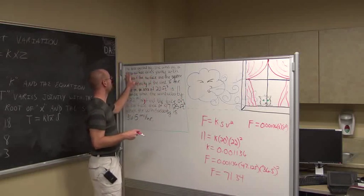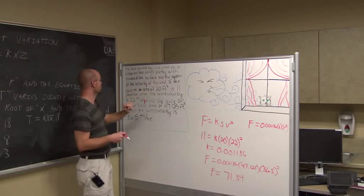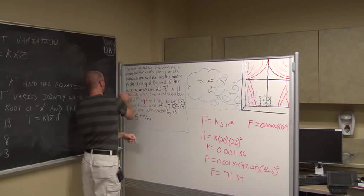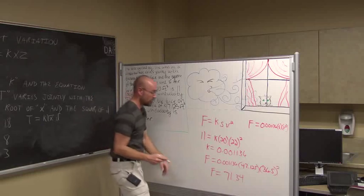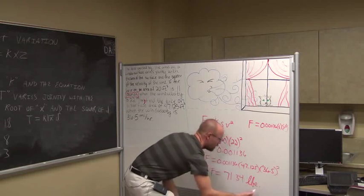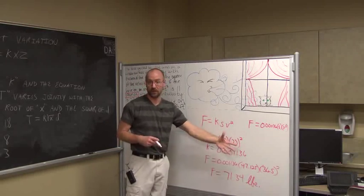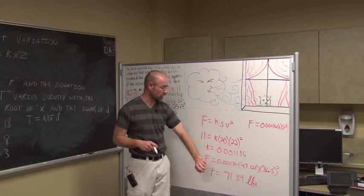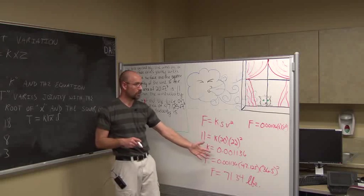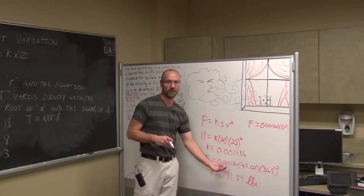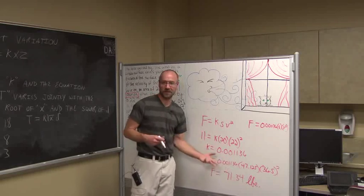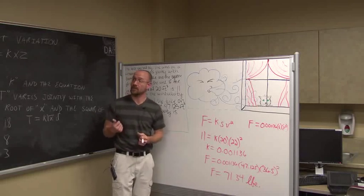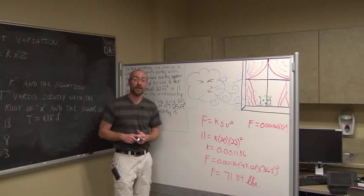Units are important in any story problem. Going back to the problem, it states the force is 11 pounds, so force is measured in pounds. Our answer is 71.34 pounds. Another way to track units is dimensional analysis — the units of K work out to 1 over square feet times miles per hour squared, which isn't a nice unit, but it is what it is. Make sure you include those units. This has been section 2.5, variation. Thank you for watching.